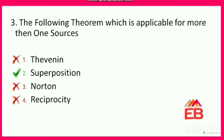Next: which theorem is applicable for more than one source? Options are Thevenin, superposition, Norton, or reciprocity. Thevenin, Norton, and reciprocity are applicable only for networks with one source. In the case of superposition, it is applicable for more than one source. So the correct option is option 2 — superposition theorem.